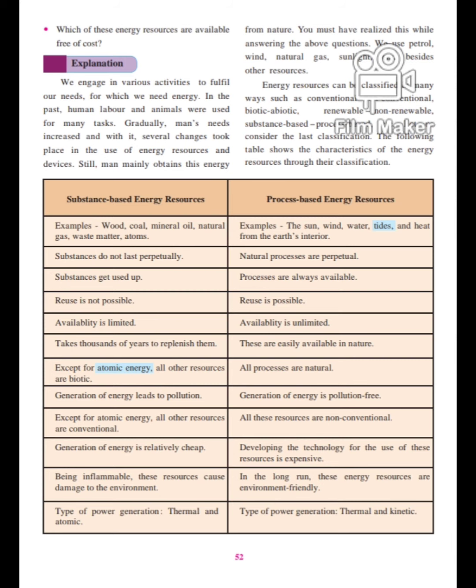Processes are always available. Every day when we wake up early in the morning, there is sunrise — you get the sun. It's everlasting. Sun, wind, water, tides — they are always there. Reuse is possible: every day you get to see the sun and receive its rays and heat, so we can reuse it. Availability is unlimited — it's enormous, tremendous. You get a huge amount of sunlight, and it is unlimited.